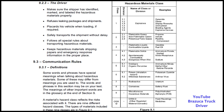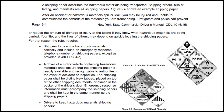A material's hazard class reflects the risks associated with it. There are nine different hazard classes; the types of materials included in these nine classes are shown in Figure 9.1. A shipping paper describes the hazardous material being transported — shipping orders, bills of lading, and manifests are all shipping papers. Figure 9.6 shows an example of a shipping paper. After an accident or hazardous material spill or leak, you may be injured and unable to communicate the hazards of the material you are transporting. Firefighters and police can prevent or reduce the amount of damage or injury at the scene if they know what hazardous materials are being carried.